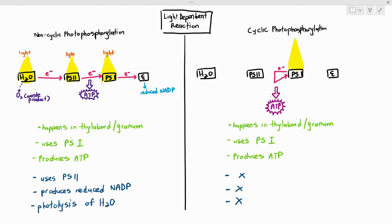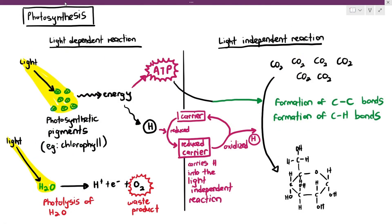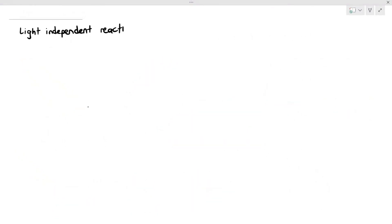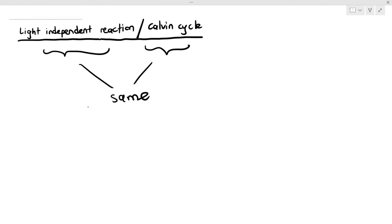The light-independent reaction is where two very important things need to happen. With the help of carbon dioxide, ATP, and reduced NADP, there must be the formation of carbon-carbon bonds and carbon-hydrogen bonds to form organic molecules. The light-independent reaction can also be referred to as the Calvin cycle — those two terms are used interchangeably.